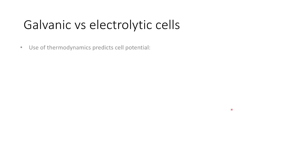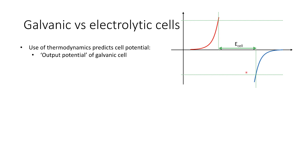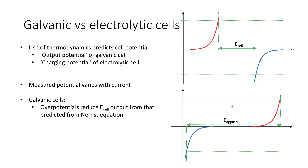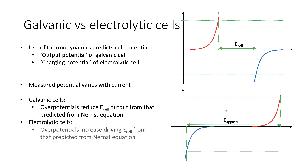When we compare galvanic and electrolytic cells, we can always use thermodynamics to predict the cell potential. However, when we actually come to do measurements, we find that the output potential of a galvanic cell is considerably lower than that predicted by thermodynamics, while the charging potential of an electrolytic cell is considerably greater. No matter which cell we're looking at, the measured potential varies with current — depending on what current is being driven, we expect a different measured potential. For a galvanic cell, overpotential reduces the output; for an electrolytic cell, it increases the applied voltage required.